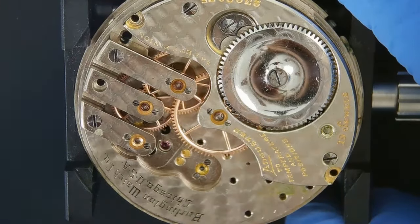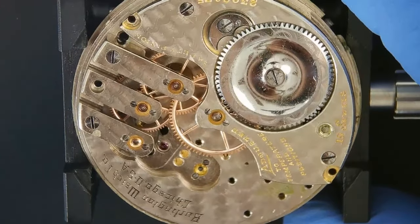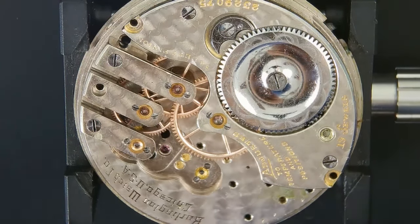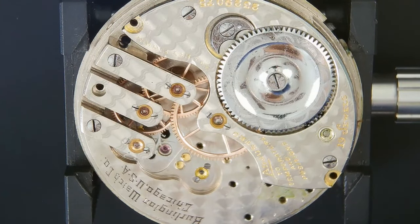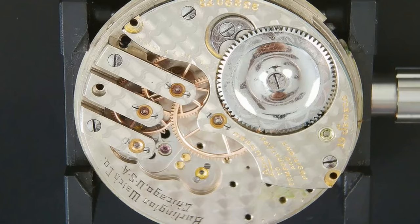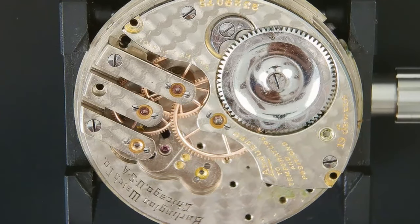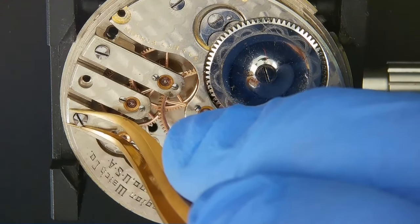Do you see the escape wheel? How it has this sluggish motion at the end, just like the pallet fork? Signs of caked on gunk are starting to pile up here.